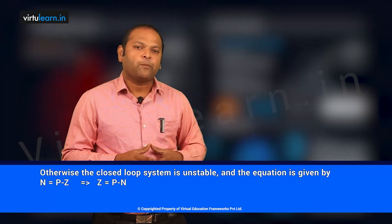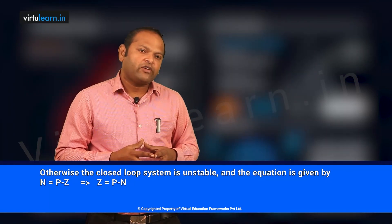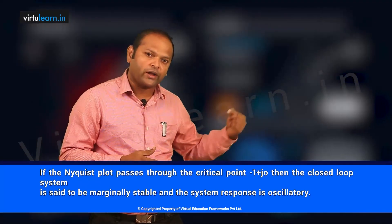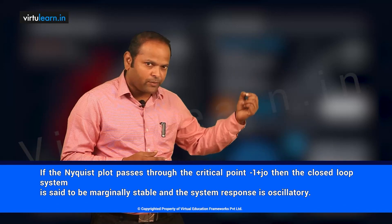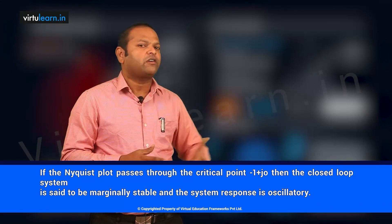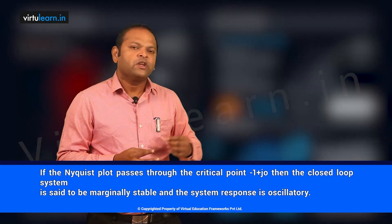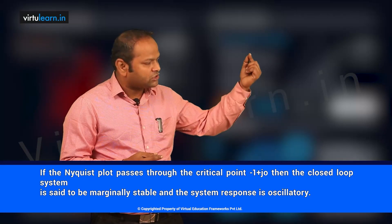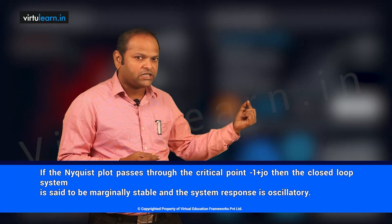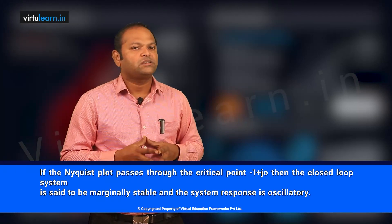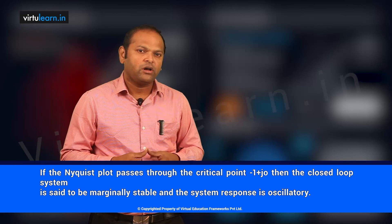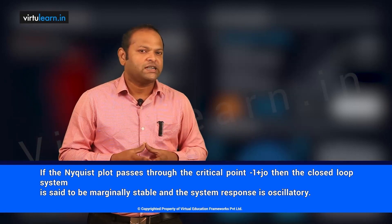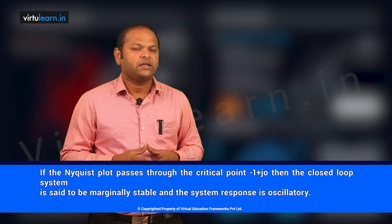For marginal stability: if the Nyquist plot passes through the critical point -1+j0, we cannot determine the number of encirclements. Whenever the Nyquist plot passes through -1+j0, the system is said to be marginally stable, critically stable, or an oscillatory system.